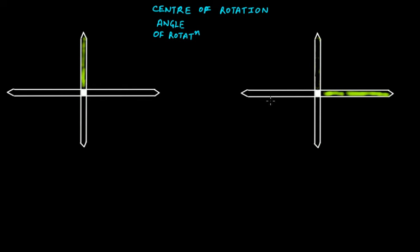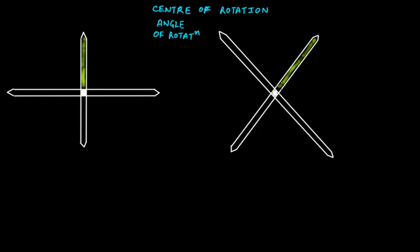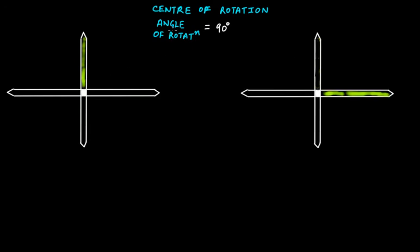This is rotational symmetry. At an angle of rotation of 90 degrees — because we first rotated 45 degrees, then rotated another 45 degrees, making a total of 90 degrees — this figure is exactly the same as the original. We now have rotational symmetry at this position; these two figures are exactly symmetrical.